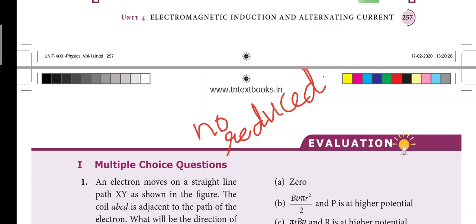Next, fourth lesson. Electromagnetic induction alternative. One one word, we can reduce it. There is no reduced one word in the fourth chapter.